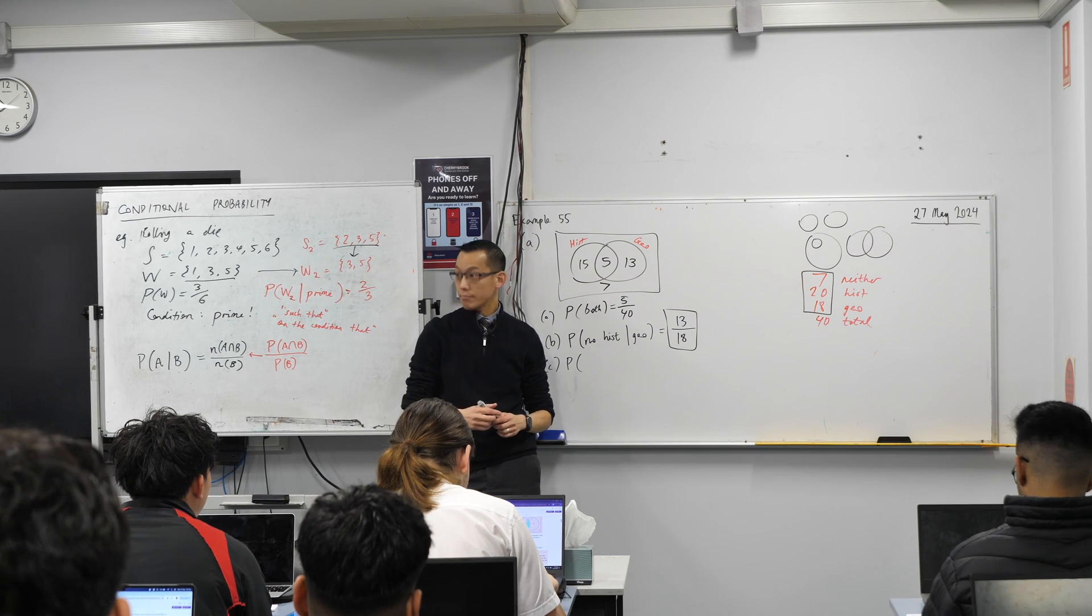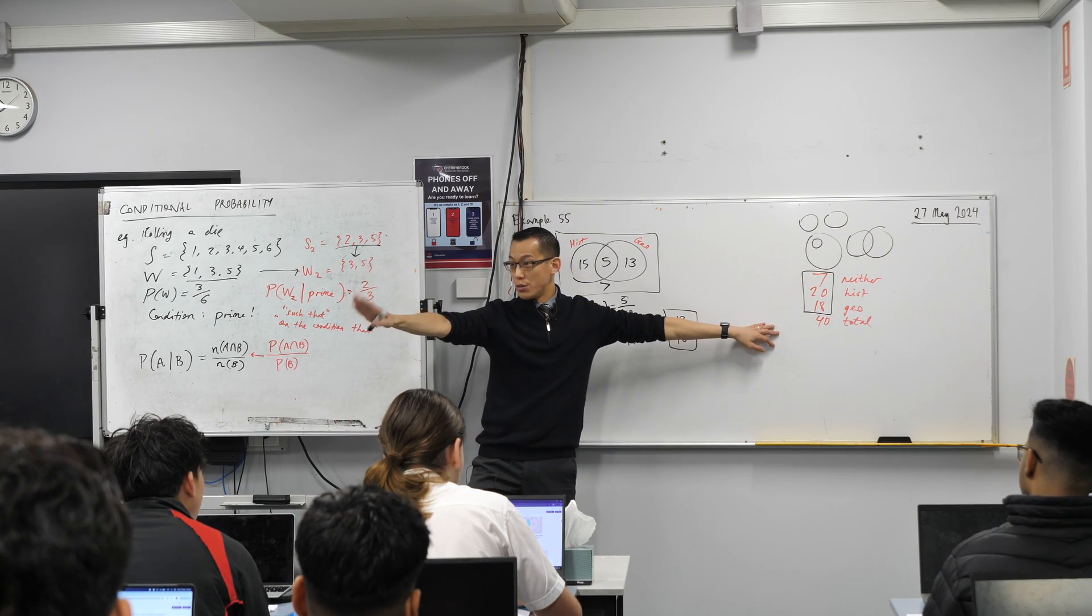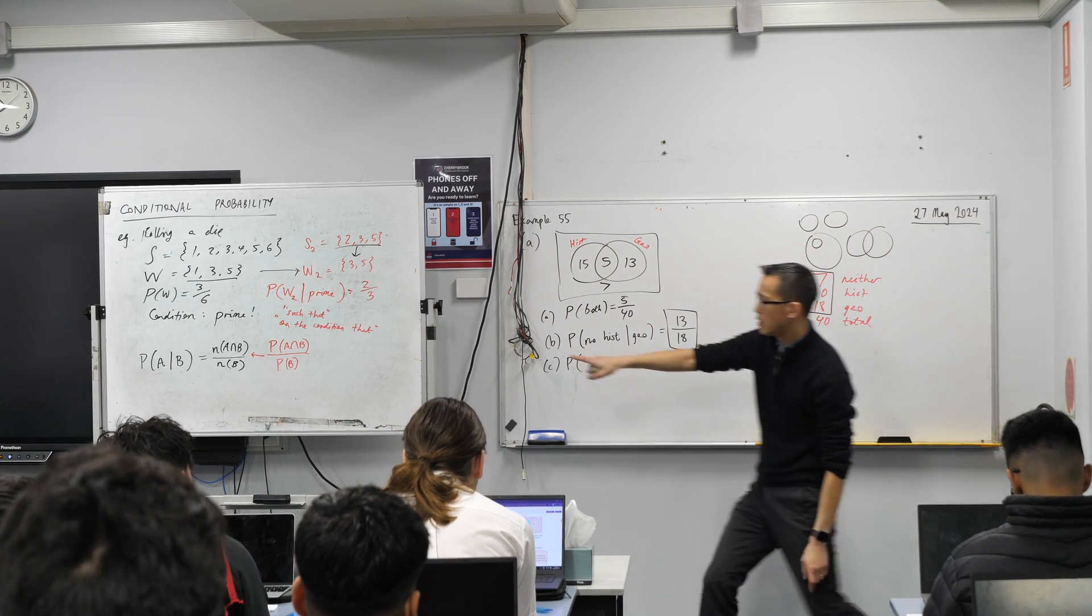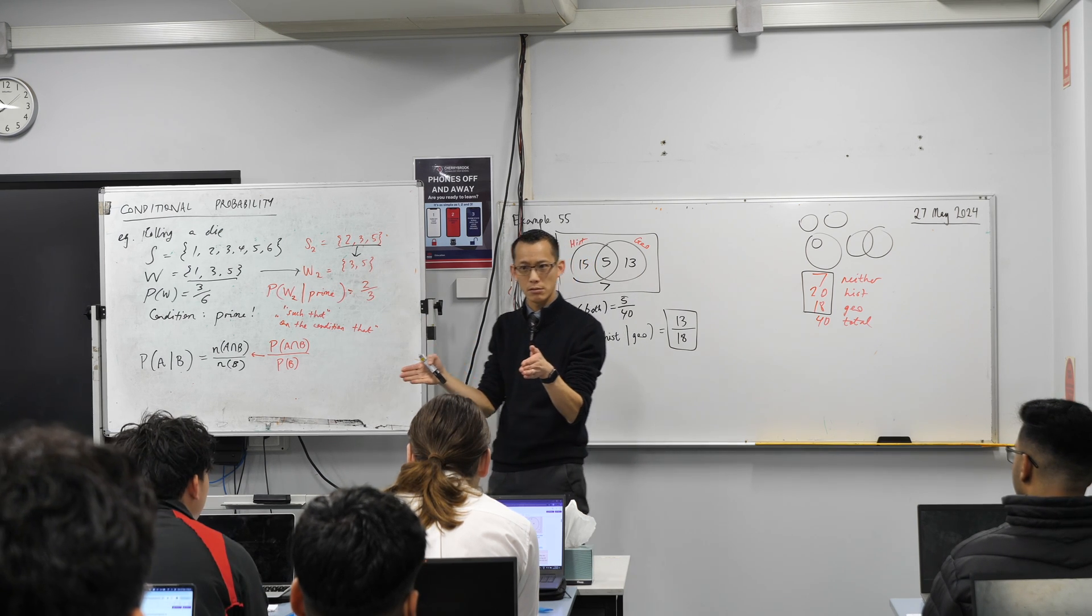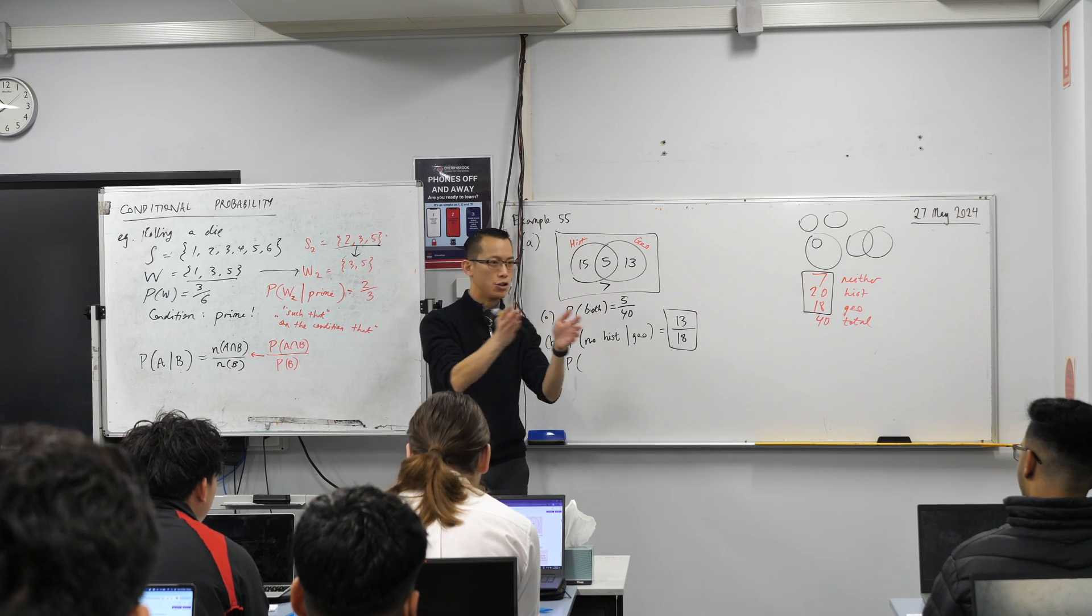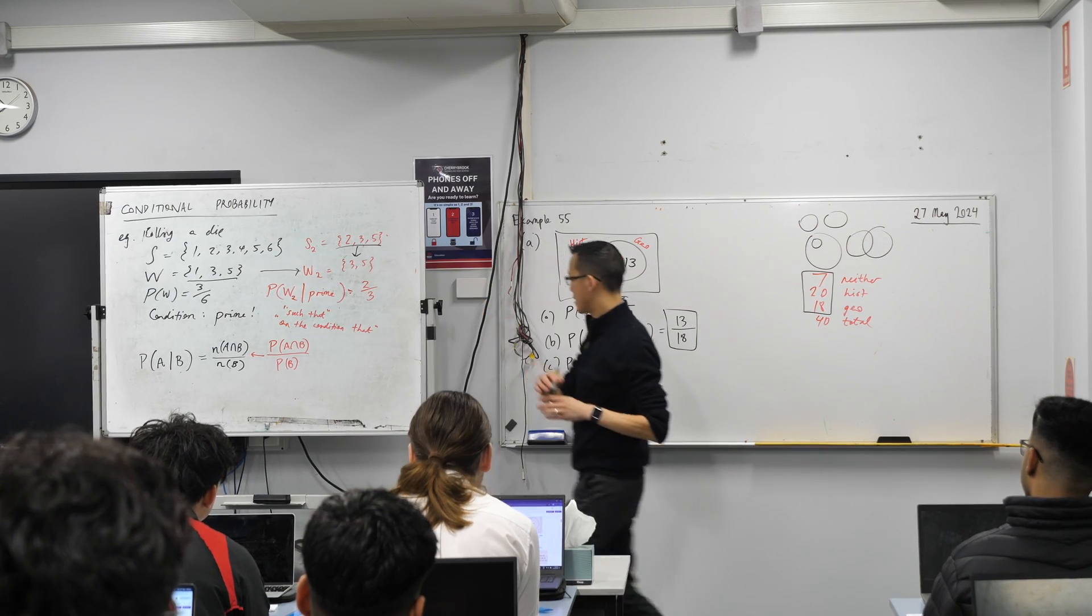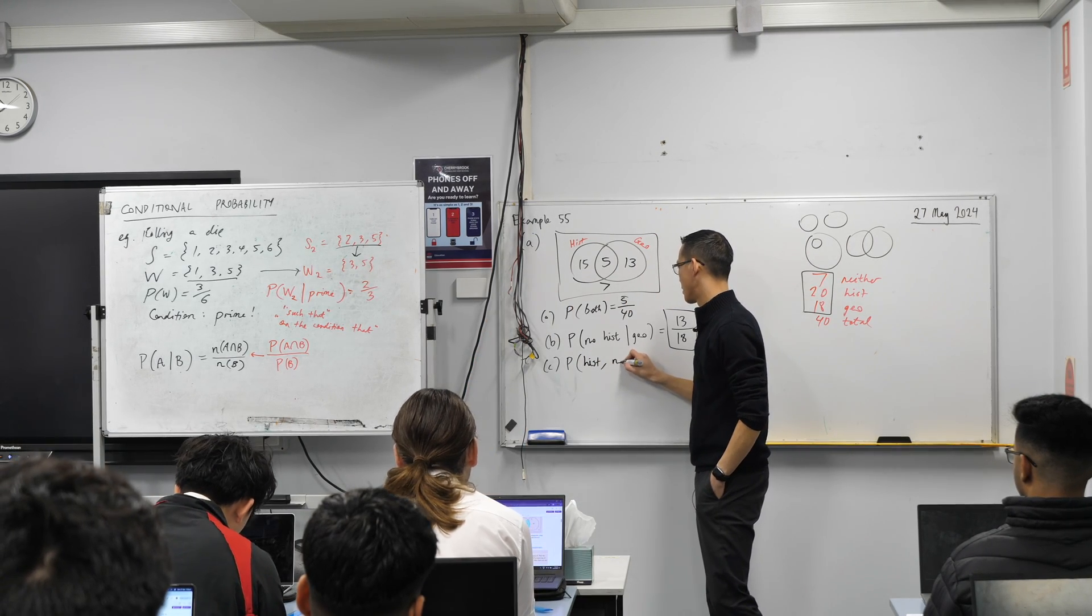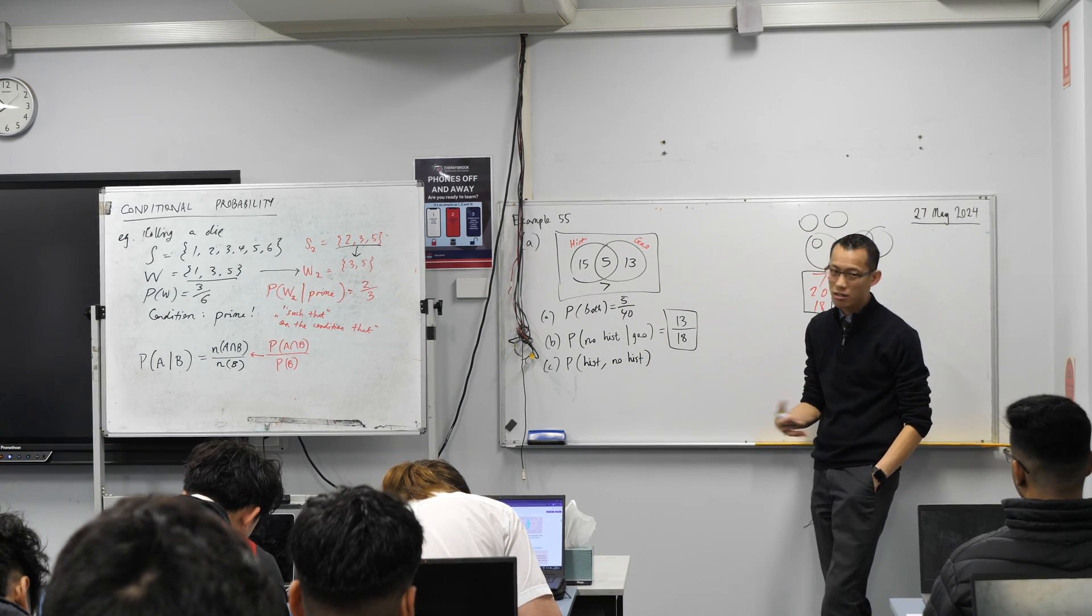We're using all 40. A way that you can know we use the whole total sample space is, when we did conditional probability, what did I use to reduce the sample space? Some condition. There's no 'you know this about this student.' You don't know anything, so it's not a conditional situation. So all I'm going to write is first one studies history, and second one no history. I'm not using my bar to indicate a condition because there is no condition. This is actually just your typical multi-stage event.